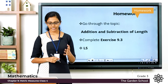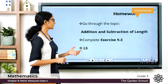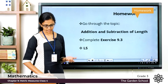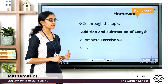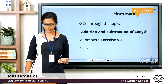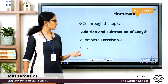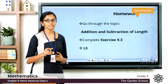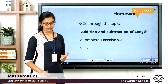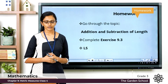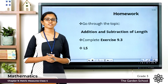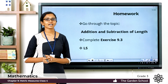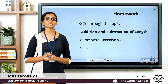Now you have to go through the topic addition and subtraction of length on page numbers 120 through 122, and complete exercise 9.3. Also on page 122 there is a life skills question — go through that and do it accordingly. That's all for today, children. I hope all the topics we learned today are clear to you. We'll meet in the next class with a new topic — till then, bye!